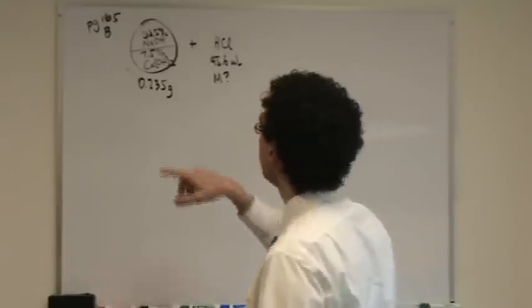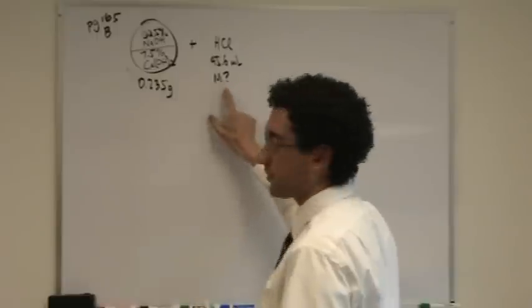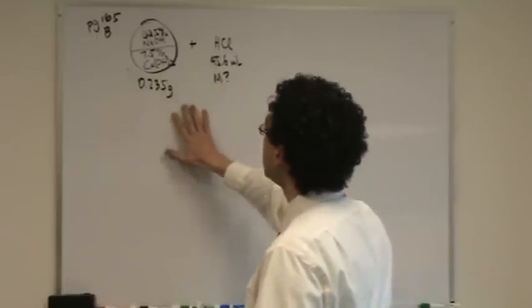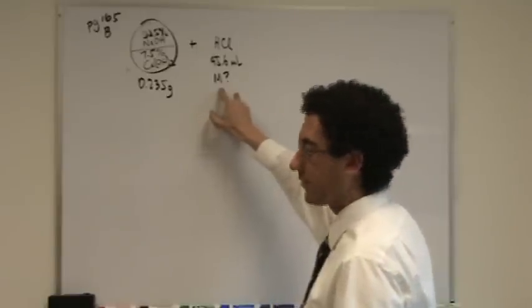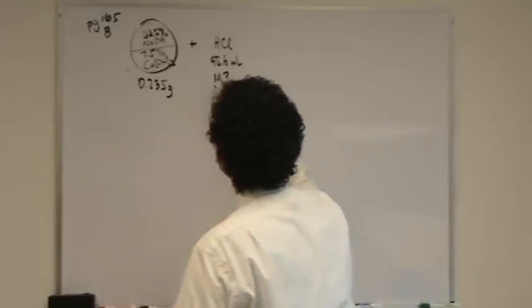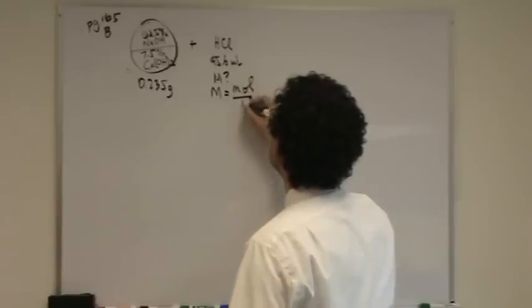This is a pretty standard example where we're going to start with the one without the question mark, change this to moles, do a molar ratio, and then find molarity here. So basically, molarity is going to be moles per liter.